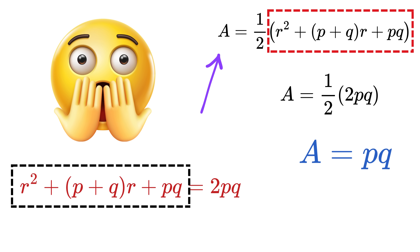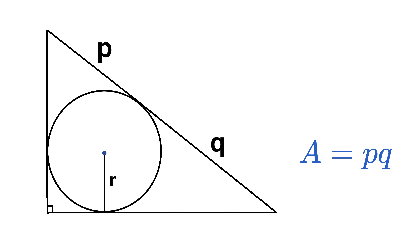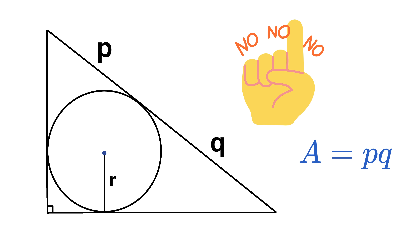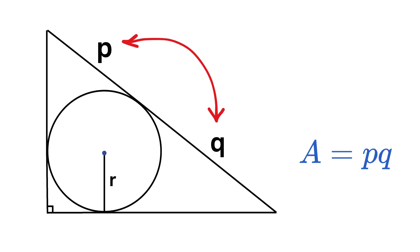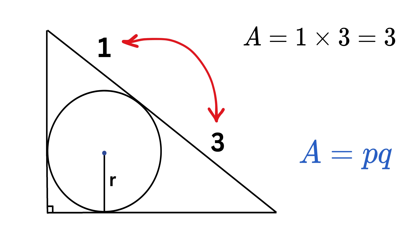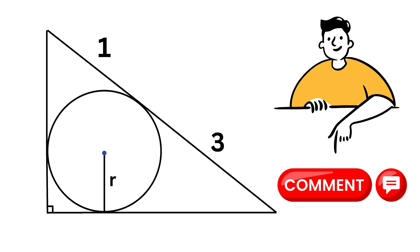That's the trick! No need to find the sides, radius, or anything else — just multiply the two tangent segments together. This works for any right triangle with an inscribed circle where you know those two segments. Plugging in p = 1 and q = 3 gives the area as 3 square units.